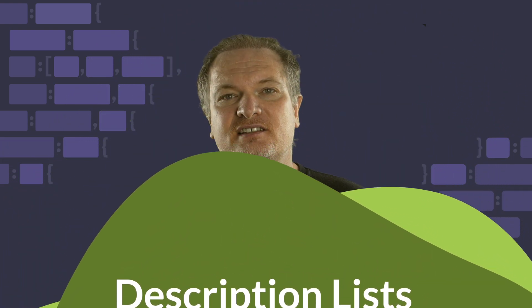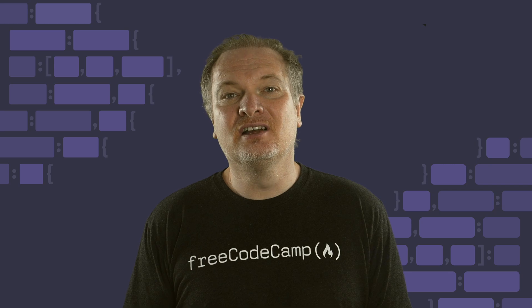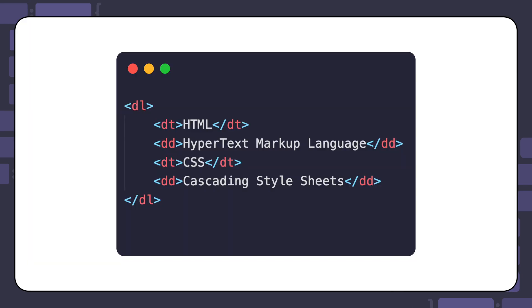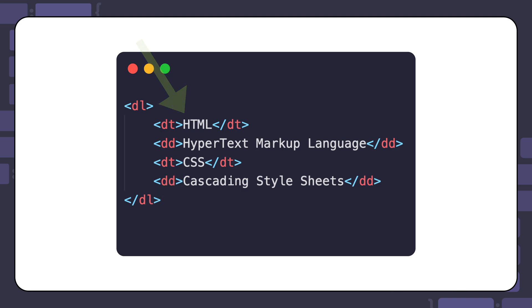This is an example of a description list in HTML with two terms and their corresponding details. In this case, the terms are the acronyms HTML and CSS, and the details are their expansions. The details could also be definitions or other information related to the terms.